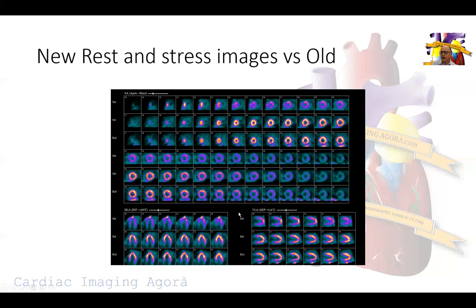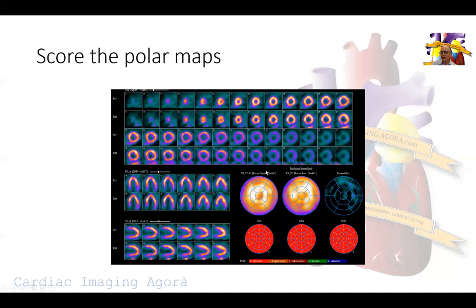This shows you that performing quality assurance on the images every single time can lead you to detect artifactual changes. In this instance, despite having software to remedy some motion artifacts, the remedy was to put the patient back on the camera and re-image them. Now we have a completely normal study as seen from the polar maps and perfusion images - we salvaged the study.